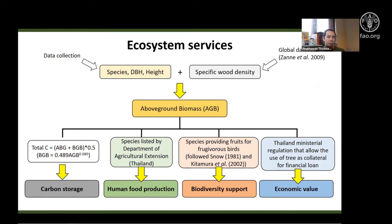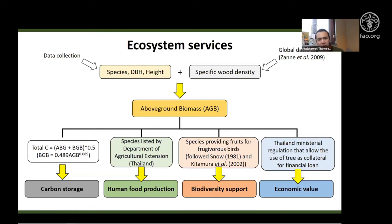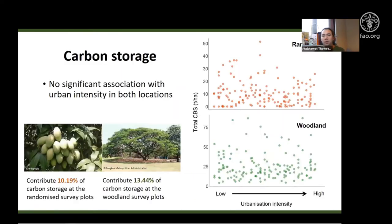The focal ecosystem services explored included carbon storage, human food production potential — defined as the biomass of species listed by Thailand's Department of Agricultural Extension — biodiversity support, focusing on species that provide food for birds, and finally economic values, which are evaluated based on Thai ministerial regulations that allow the use of trees as valid collateral to secure financial loans for people.